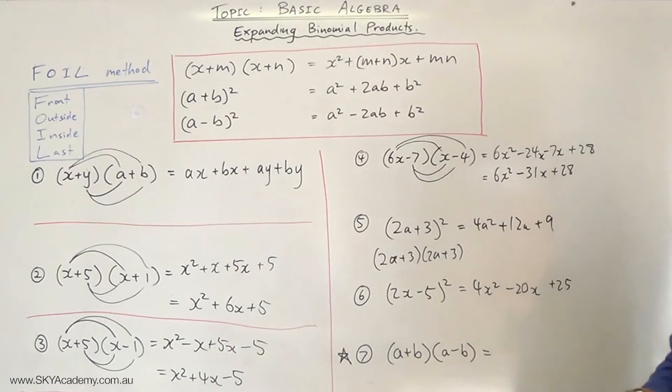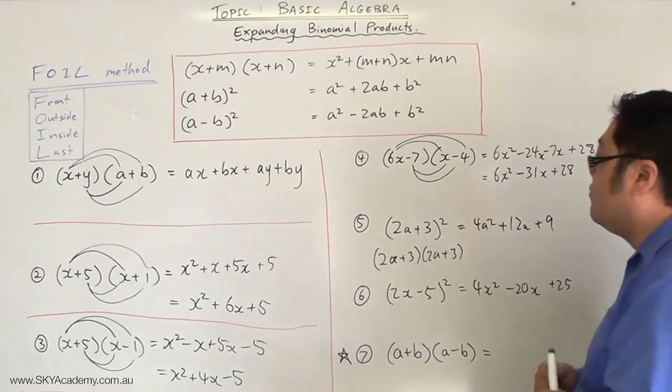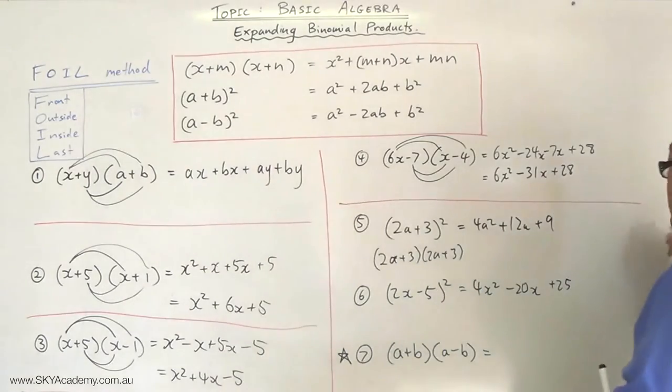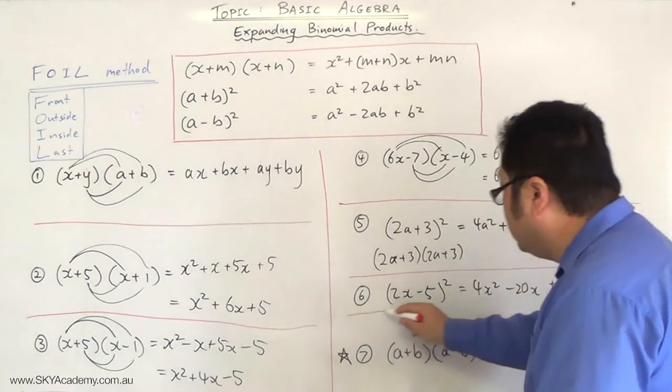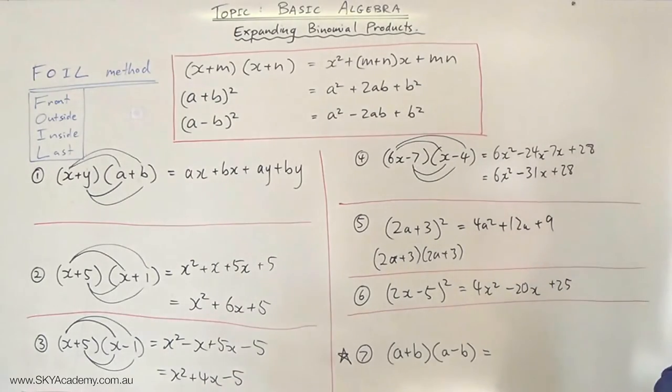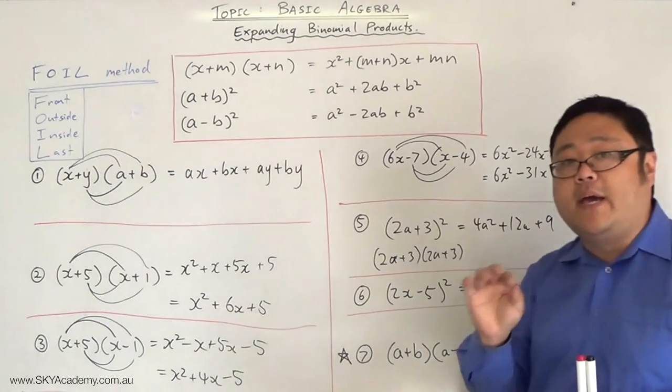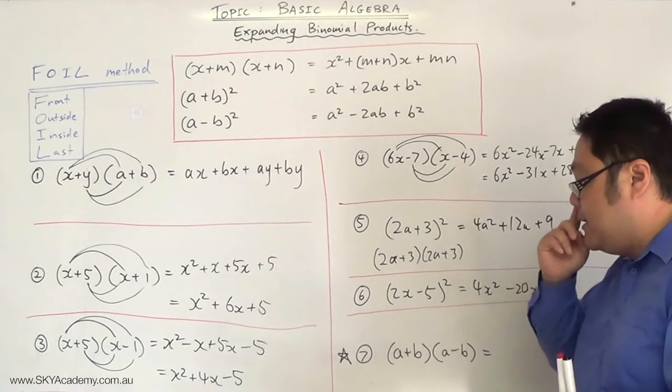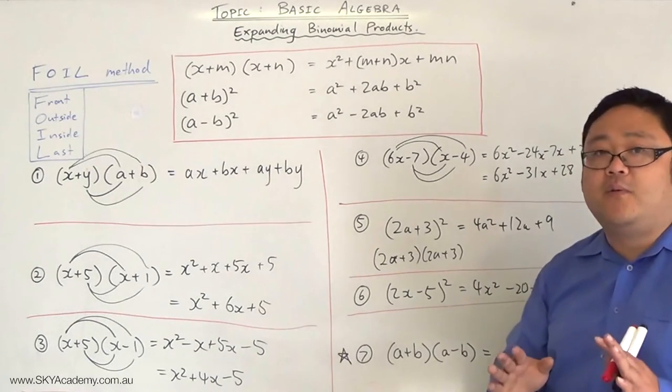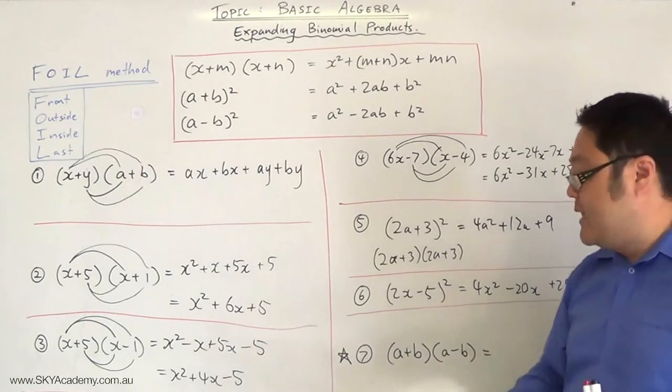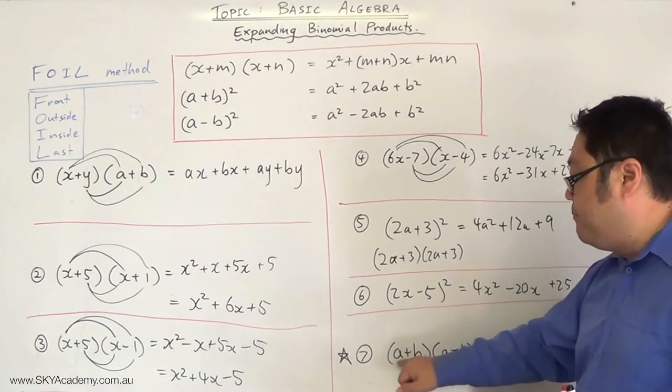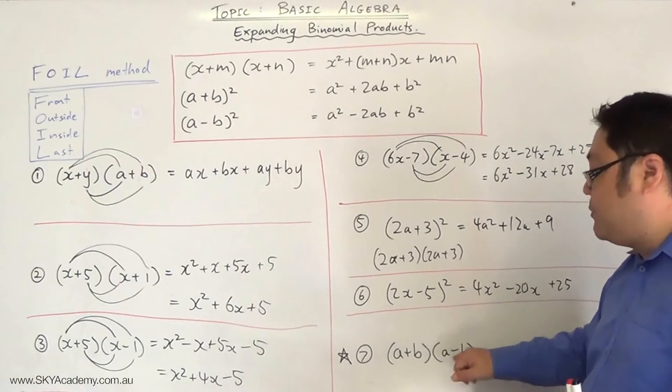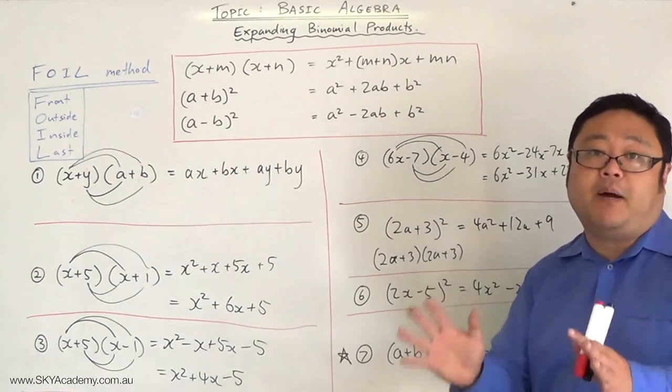This one here I've kept till lucky last, and the reason why I've kept this question till lucky last is because this is another type of special binomial expansion. It's called the difference of two squares. It's not the difference of two squares—it will become the difference of two squares—but what it is is the sum of a binomial term multiplied by the difference. So we call it the sum by difference.